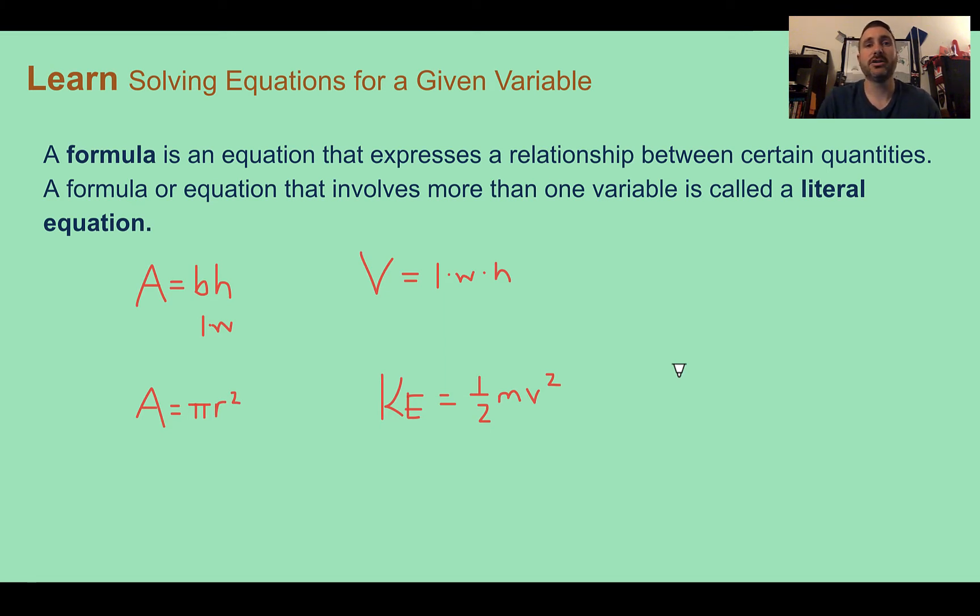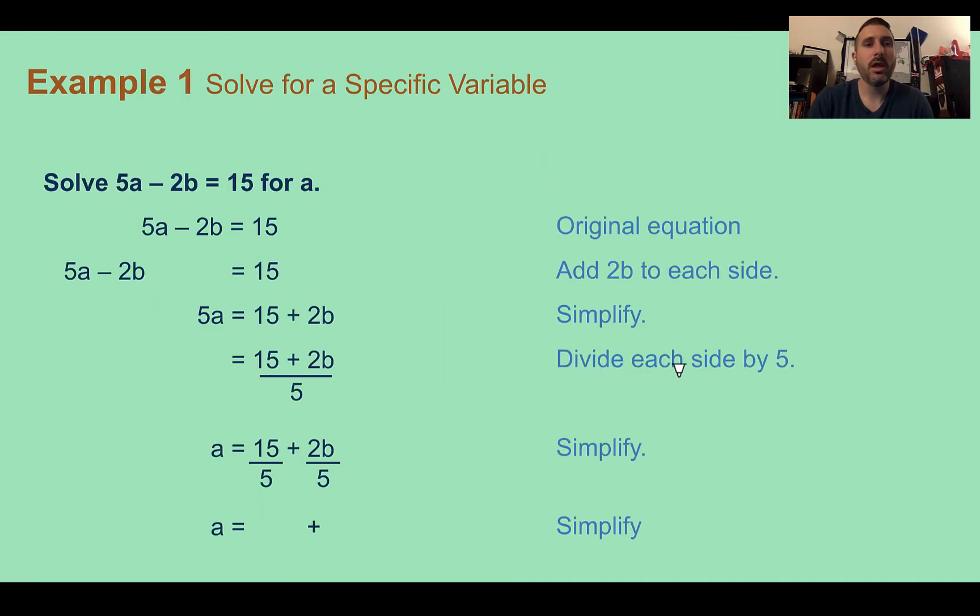Example one: solve for a specific variable. So solve 5a minus 2b equals 15 for a. For all of these they're going to tell you what variable that you need to get alone on one side. So here we need to get a isolated. So 5a minus 2b equals 15. First thing to undo and get everything away from that a, I would undo the subtraction of the 2b and I'm going to do that by adding it to both sides just as if it was a number.